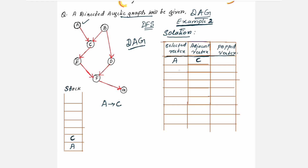Now, select that adjacent vertex C and see what is the neighbor for vertex C. For C, you have the adjacent vertex or neighbor — sometimes I am using neighbor, sometimes adjacent vertex; both mean the same. C has got one neighbor, it is E. So E is now placed in this column.